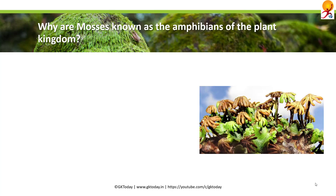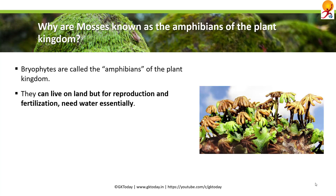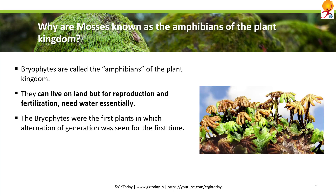Why are mosses known as the amphibians of plant kingdom? Bryophytes or mosses are called the amphibians of plant kingdom. As the term amphibian suggests, they can survive on both water and land — they can live on land, but for reproduction and fertilization they need water. Bryophytes were the first plants in which alternation of generation was seen.